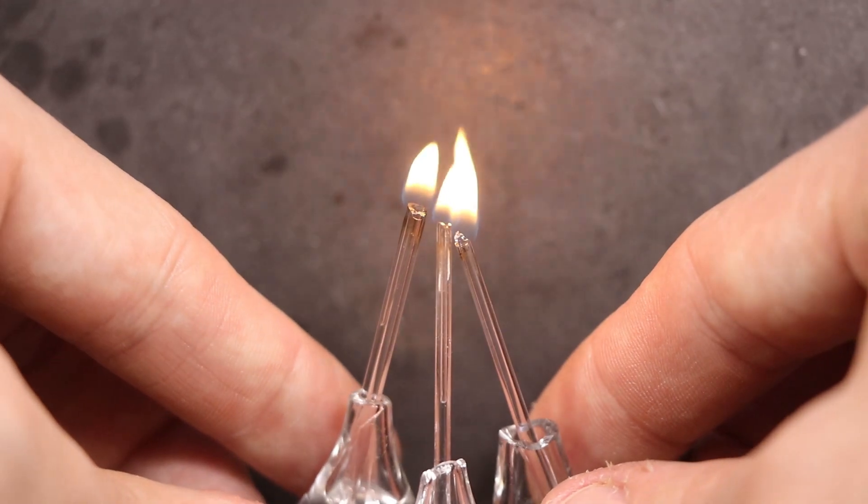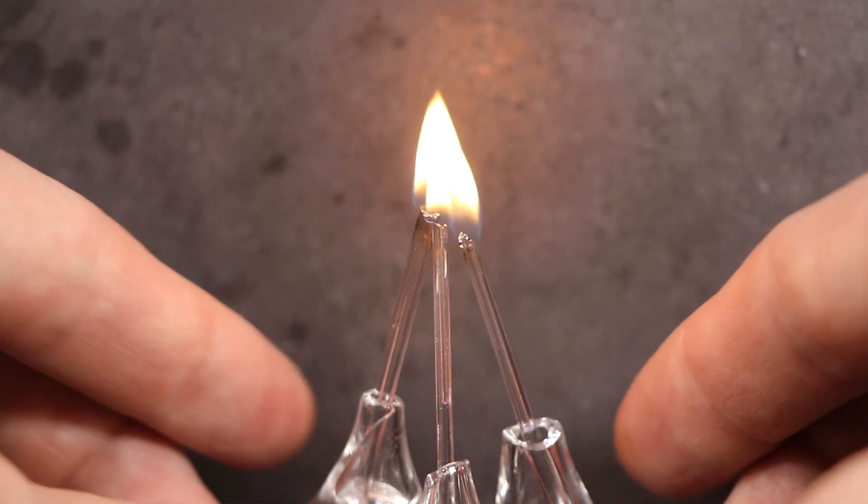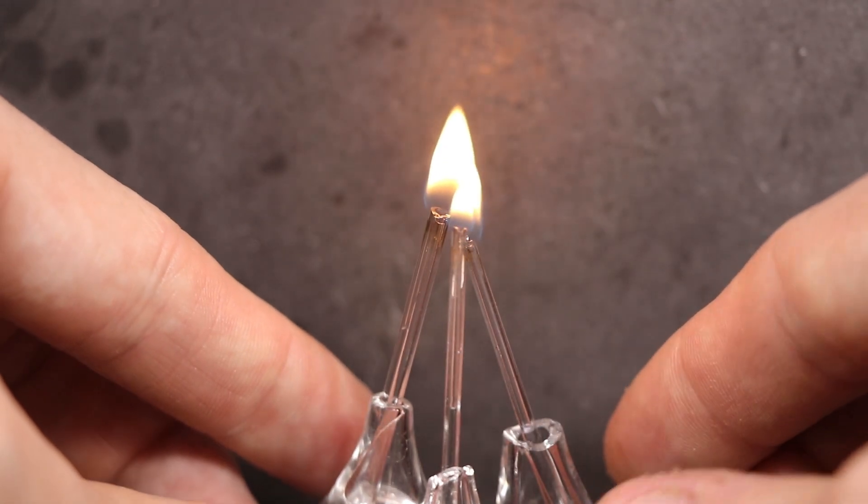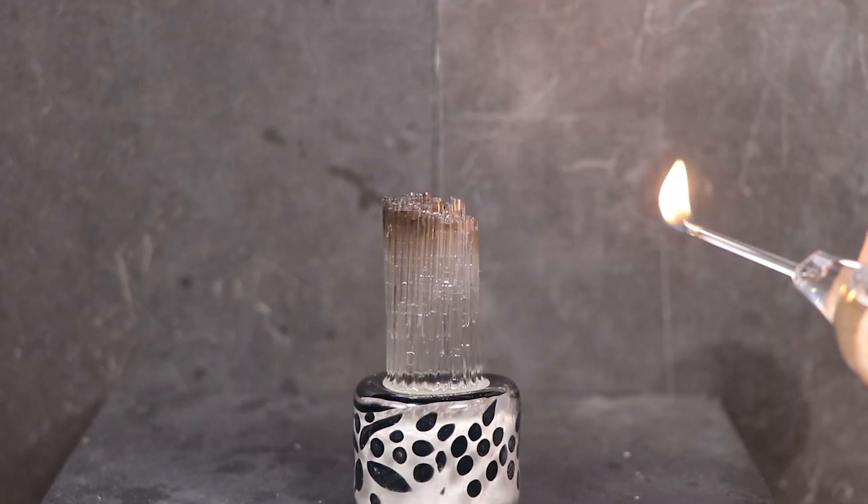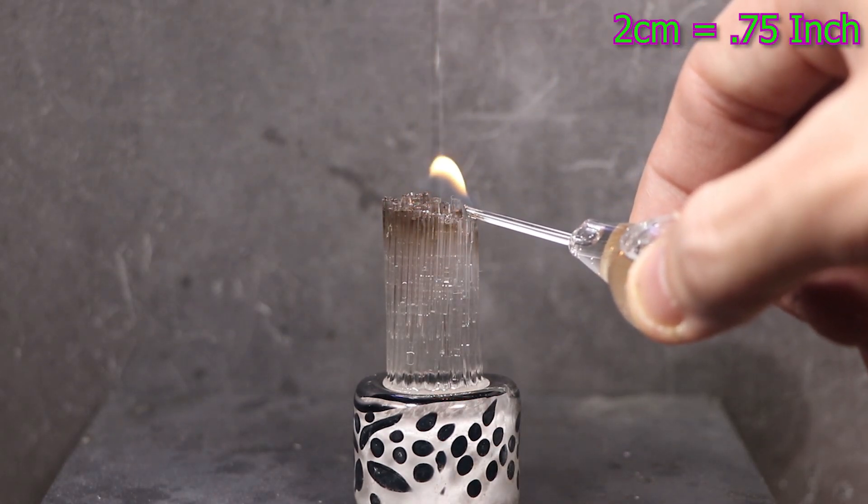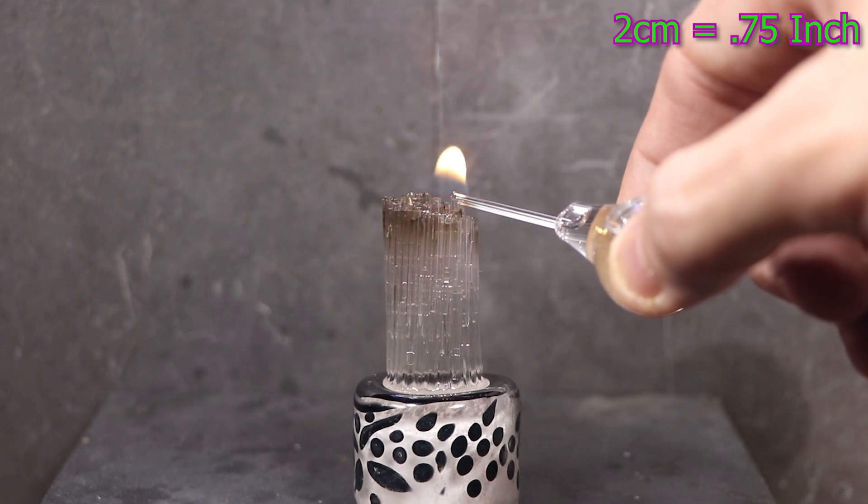I've used multiple wicks before in my distillery set. So I know already they work better together. But what if I jam 50 capillary candles into a two centimeter round space? Let's find out.